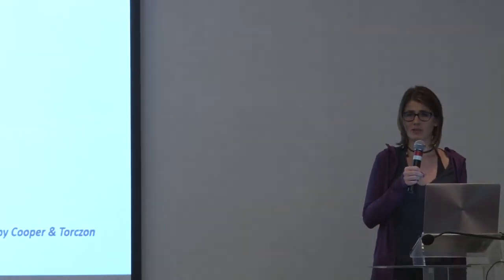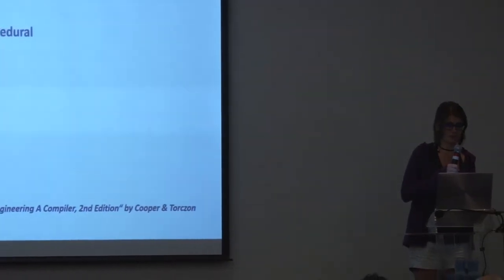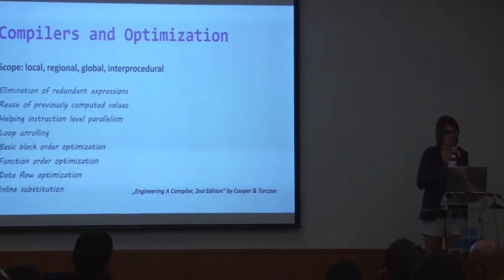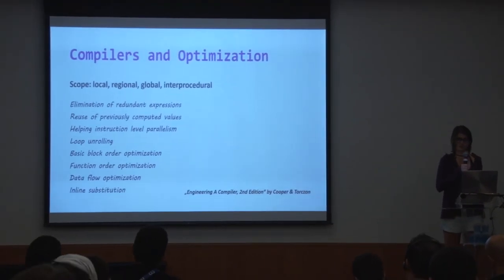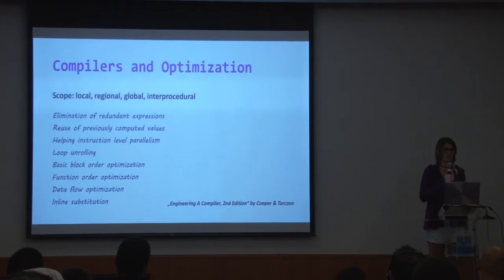Let me clarify: in this talk I'm not a specialist on compilers — I skipped that class at university because I thought it was boring, which was one of the biggest mistakes I made in my life. Optimization by itself is a huge topic you could speak about for an hour or more, so I kept the chapter short and will refer you to a very nice book called Engineering a Compiler, second edition, by Cooper and Torczon, which has an entire chapter of about 100 pages on how optimization works.